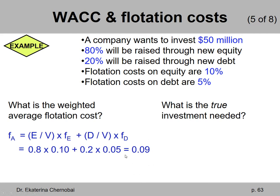So, whatever money we raise by selling common stock shares and bonds, 9% of that will be gone — paid to some third party as a fee for helping us go through the process of issuing the new financial securities.